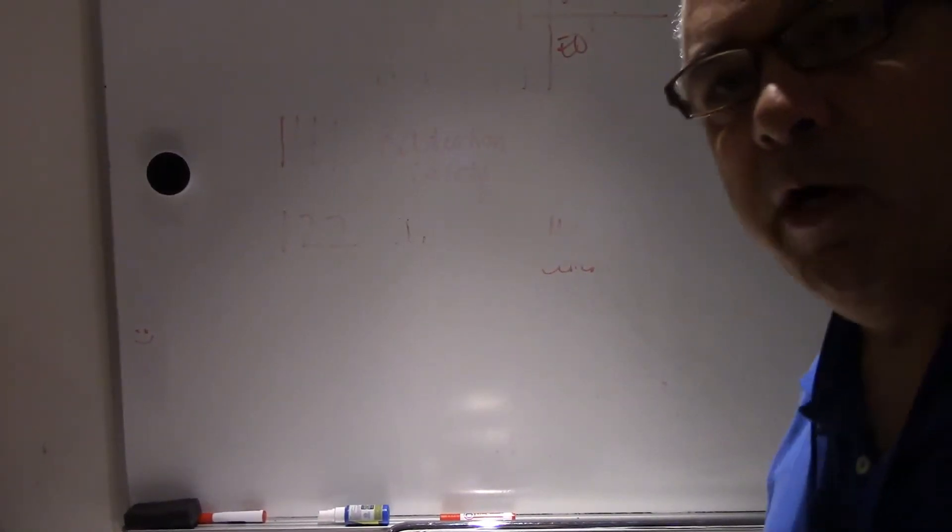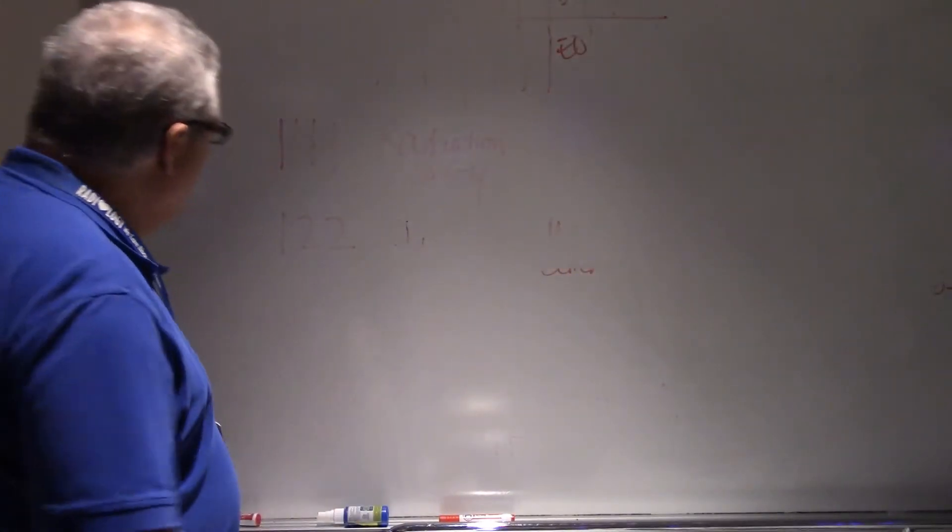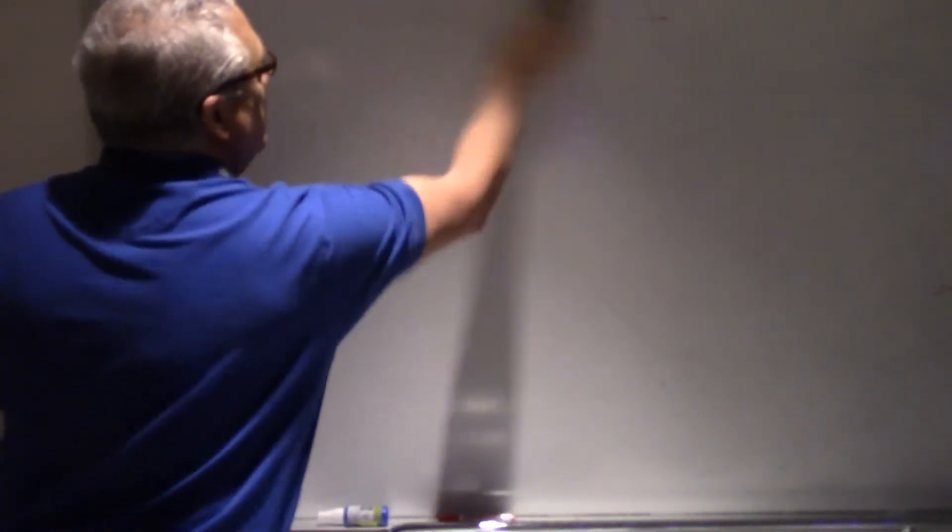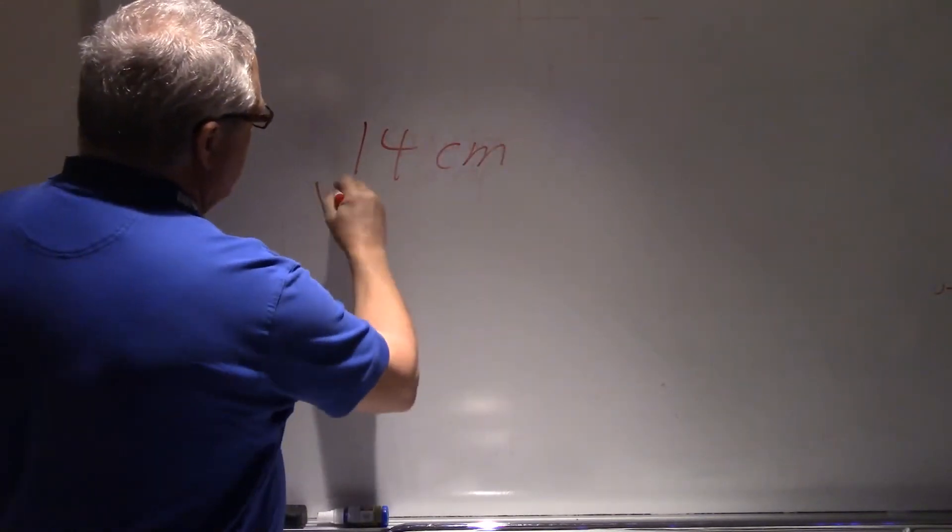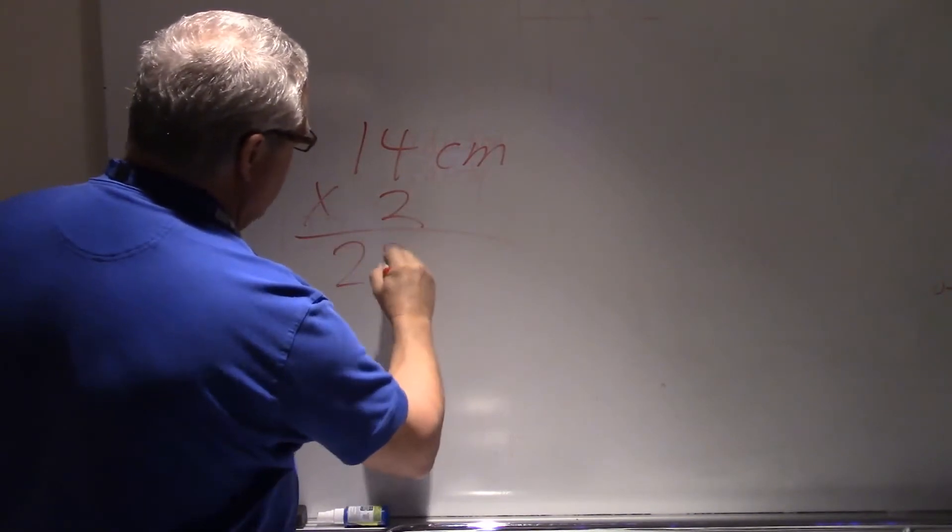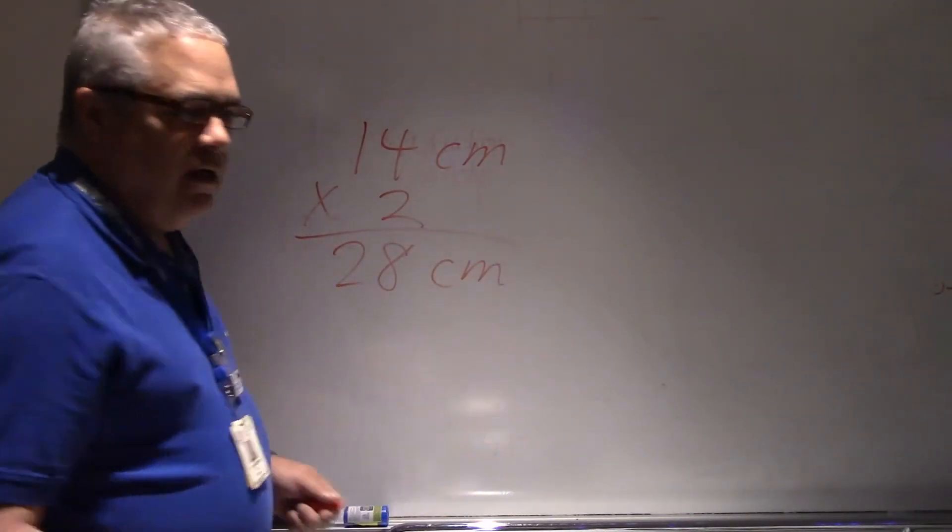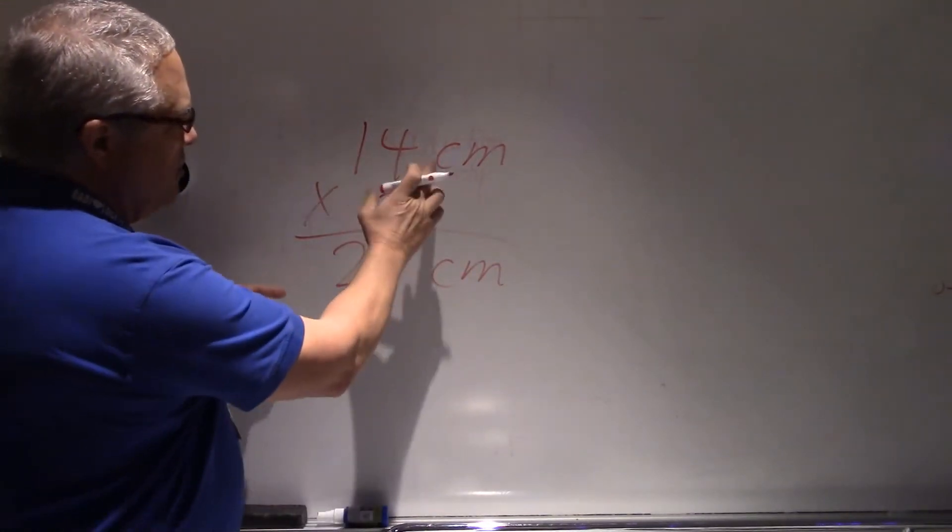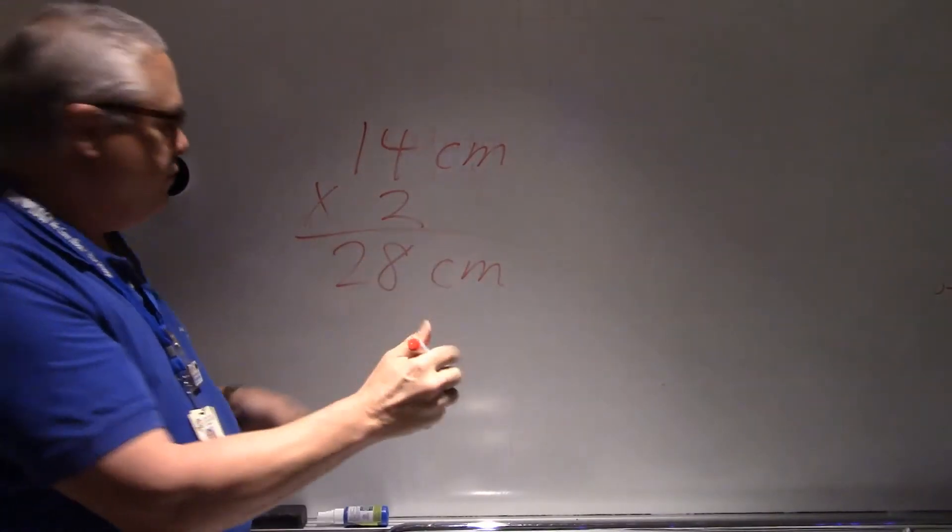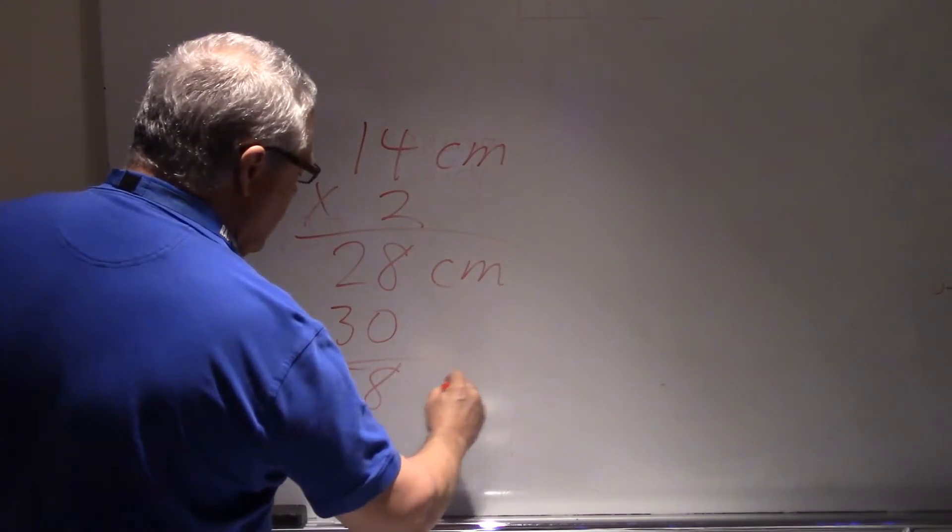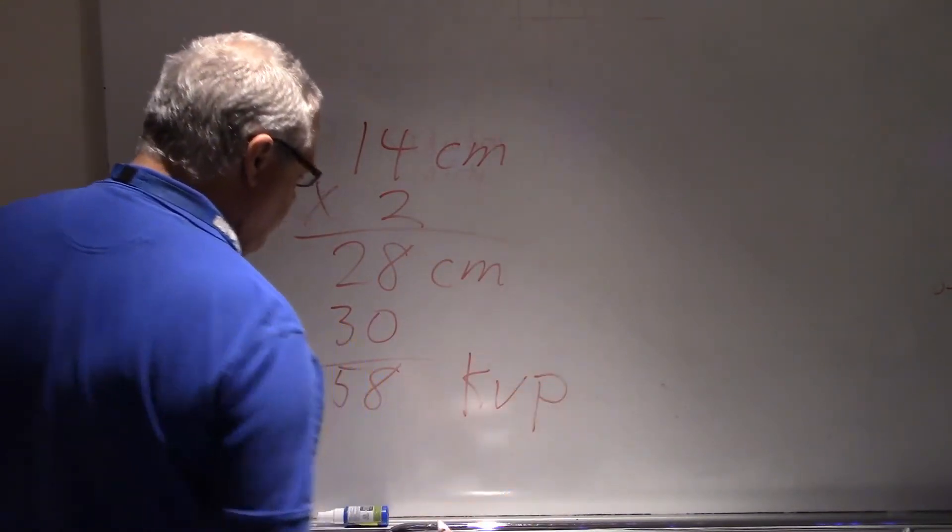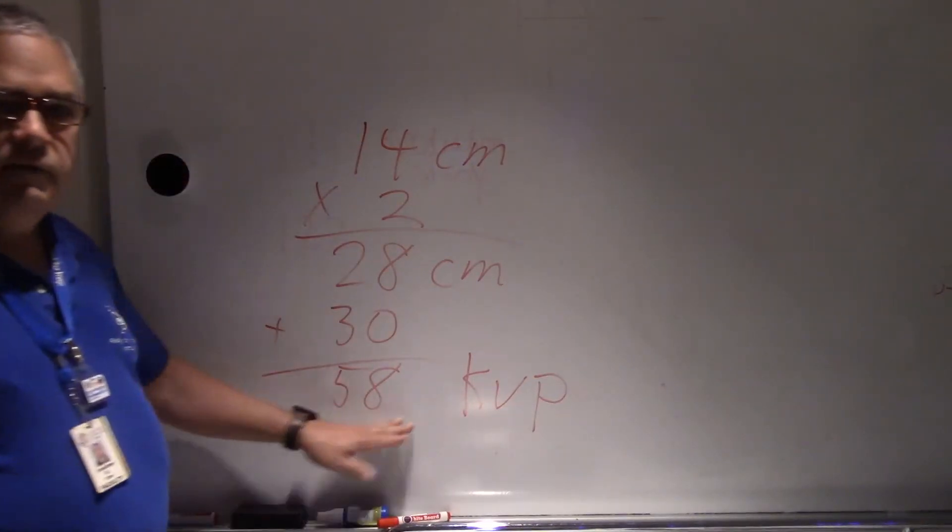Not a rhetorical question, we're actually going to figure this thing out. It would be nice if somebody would erase the whiteboard once in a while. So we have 14 centimeters, and then we're going to multiply that by two and we're going to come up with 28 centimeters. For our kVp, remember we were going to take our centimeters times two and then add 30, so that's going to give us a starting technique of 58 kVp.